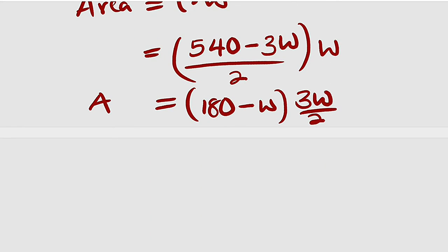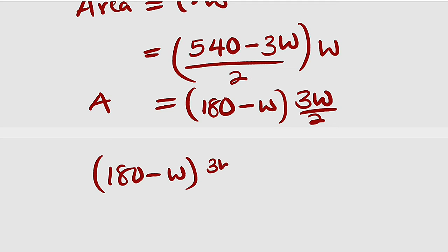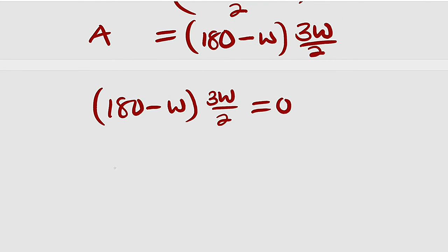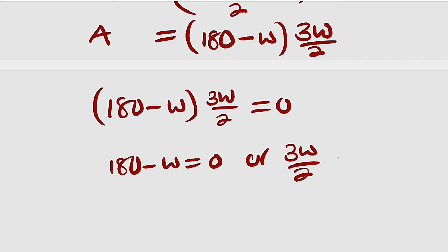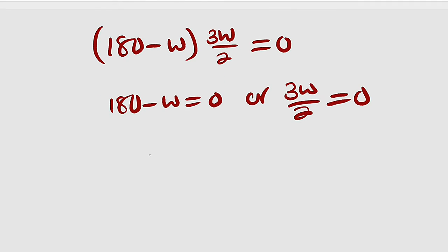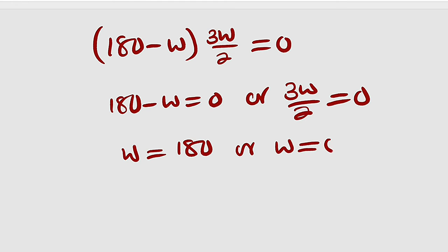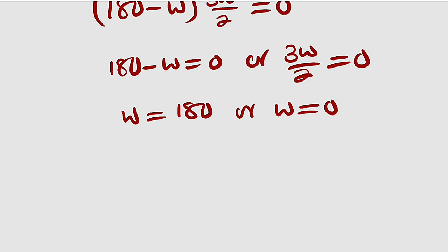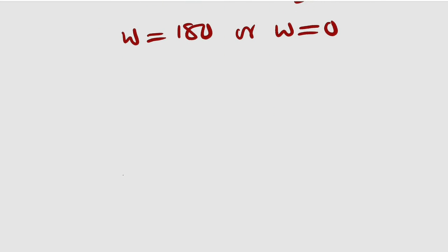First of all, let us find the zeros by setting A equal to 0. So we have (180 minus w) equal to 0 or (3w divided by 2) equal to 0. We are going to set the two factors equal to 0. Either (180 minus w) equal to 0 or (3w divided by 2) equal to 0. From the first one, w becomes positive on the other side: w equal to 180, or w equal to 0. But none of these values of w will make the greatest area.